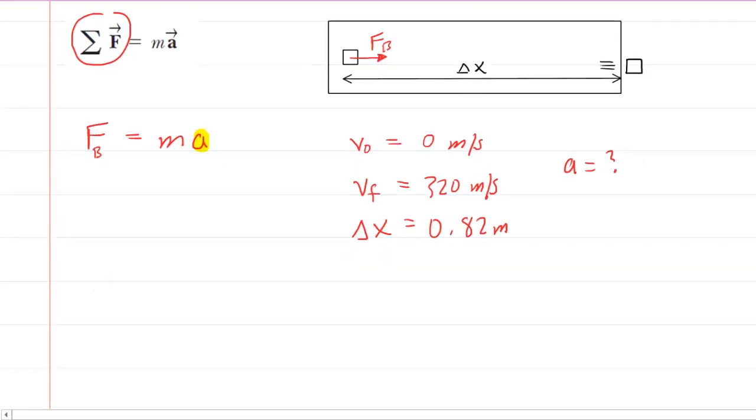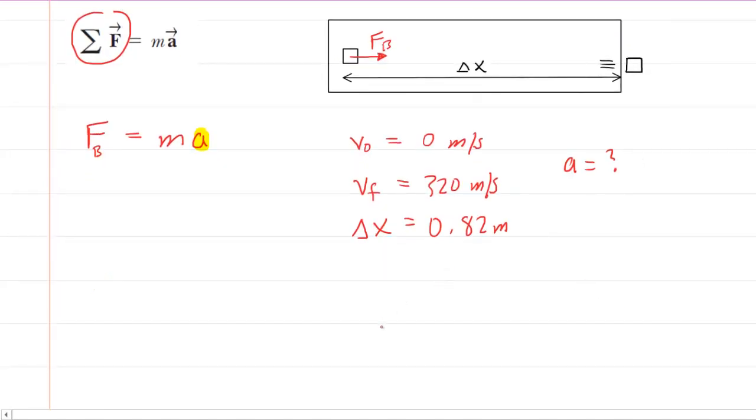Now we have a number of equations from kinematics but the one that's going to be most useful in this case is the following. And the reason it's the most useful is because it contains everything we know except for the variable that we're looking for, the acceleration.